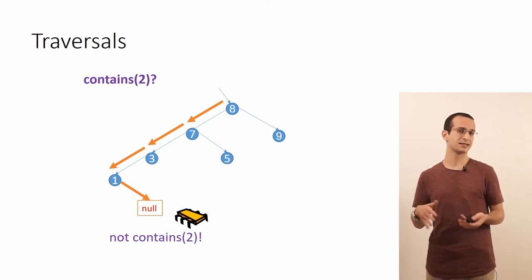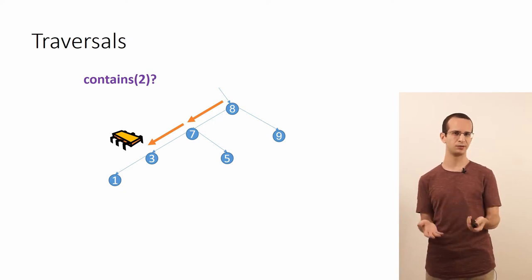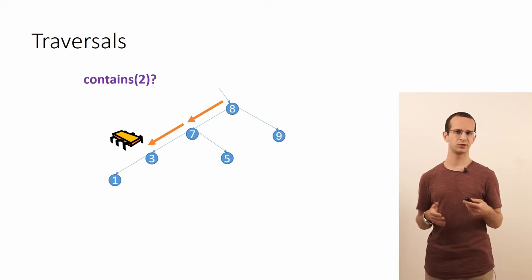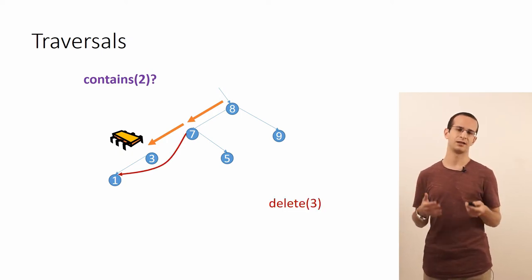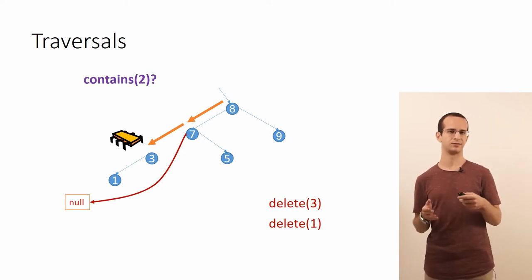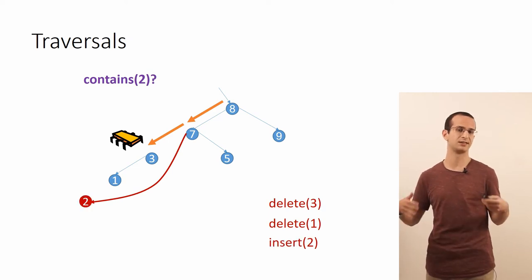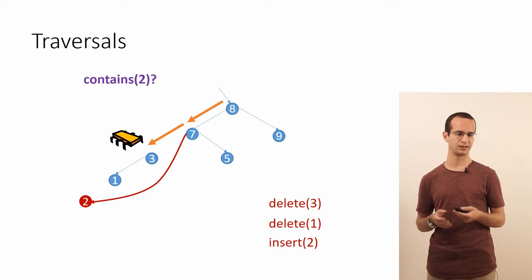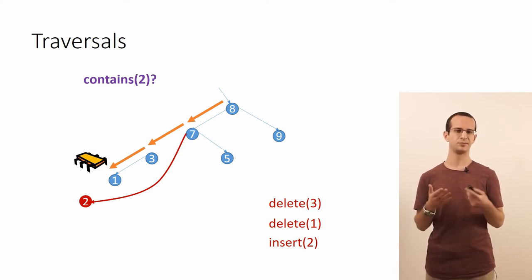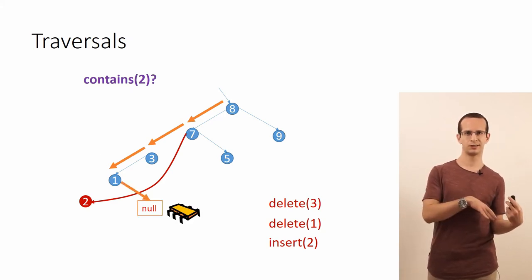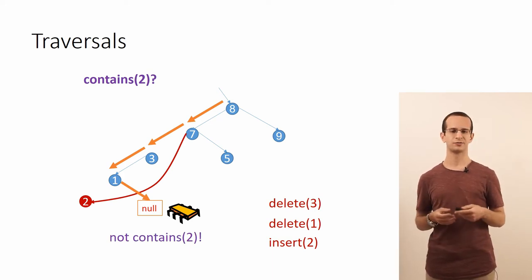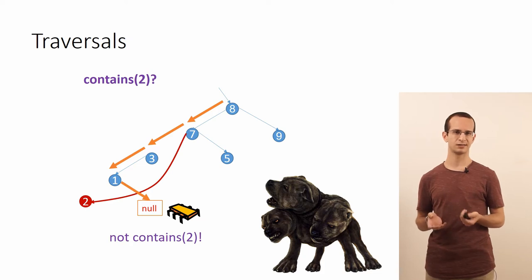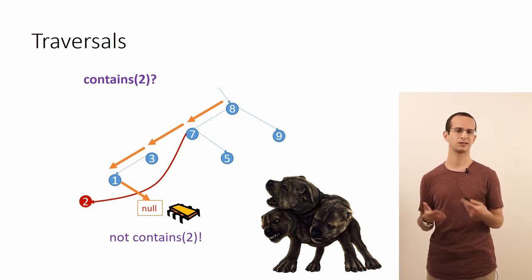And this is all very well, unless something else has happened concurrently that we weren't aware of. So let's rewind a bit to the point where the traversal was about to read the pointer from 3 to 1, and suppose that at this point there's a deletion of 3. Now perhaps there's a deletion of 1, again modifying the left child of 7. Now perhaps there's an insertion of 2 into the tree, again modifying the left child of 7. Now the traversal wakes up, reads the pointer from 3 to 1, and then continues from 1 to the right, again seeing that the right child of 1 is null, and the traversal declares that the tree doesn't contain the value 2, although it really does. So older data structures avoided these kinds of behaviors by introducing synchronization into the traversal, so the traversal synchronizes with writers to eliminate such strange behaviors.